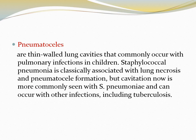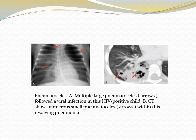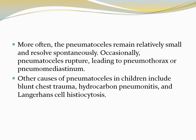Pneumatoceles are thin-walled lung cavities that commonly occur with pulmonary infection in children. Staphylococcal pneumonia is classically associated with lung necrosis and pneumatocele formation, but cavitation is now more commonly seen with Streptococcus pneumoniae and can occur with other infections including tuberculosis. Multiple large pneumatoceles may follow viral infection in an HIV-positive child. More often pneumatoceles remain relatively small and resolve spontaneously. Occasionally, pneumatocele rupture leads to pneumothorax or pneumomediastinum. Other causes include blunt chest trauma, hydrocarbon pneumonitis, and Langerhans cell histiocytosis.